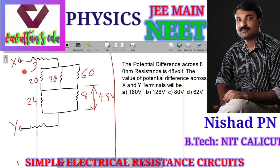Now I have a second circuit. What is the potential difference between terminal X and Y? The values are: 3 ohm, 20 ohm, 30 ohm, 60 ohm, 8 ohm, 24 ohm, and 1 ohm. The voltage across the 8 ohm resistance is 48 volts.